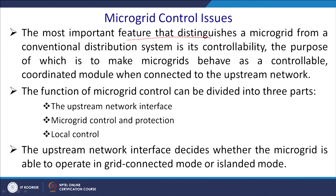Droop control can be AC and DC, and voltage and frequency control is required for the AC microgrid. The most important feature that distinguishes a microgrid from a conventional distribution system is its controllability. The function of the microgrid control can be divided into three parts: the upstream network interface, microgrid control and protection, and local control.